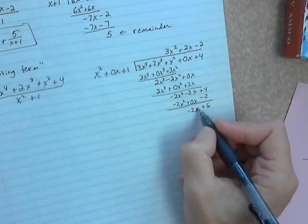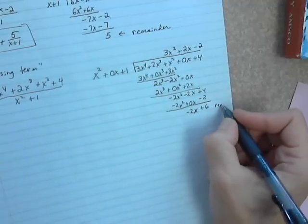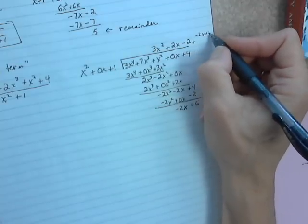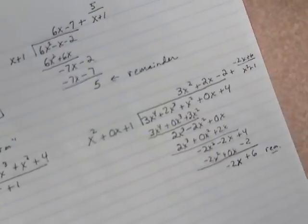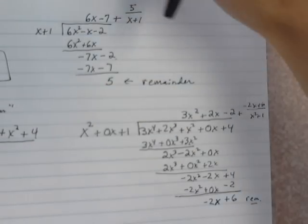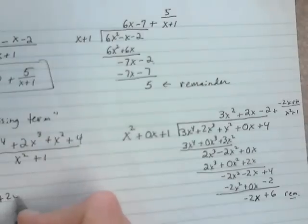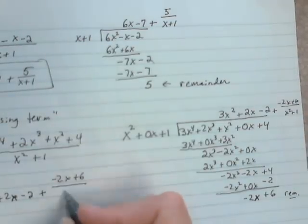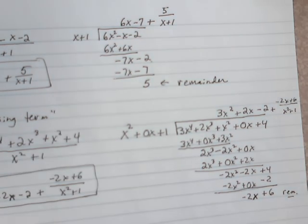When we get down to the point where the exponent on the final polynomial is less than the exponent of the divisor, we're done — that is the remainder. So you add to this answer the remainder of negative 2x plus 6, all over the divisor x² plus 1. The answer to this division problem is 3x² plus 2x minus 2, plus the remainder (negative 2x plus 6) over x² plus 1. That's the third example with a missing term.